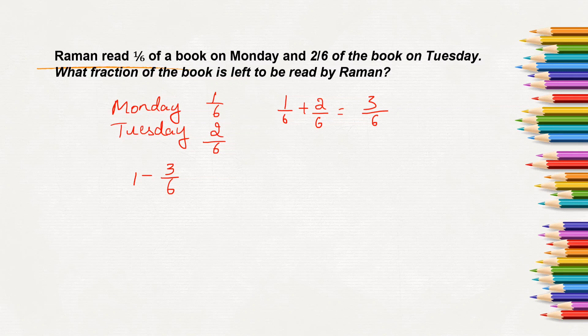When do we call it as one whole? Yes, as it is out of out which means 6 out of 6 we will call it as one whole. So 6 by 6, he has read 3 by 6 which needs to be subtracted, that is minus 3 by 6.